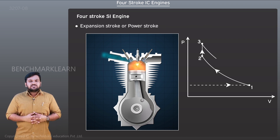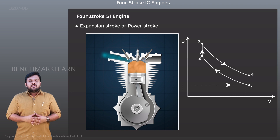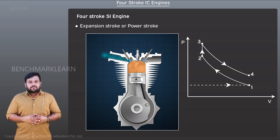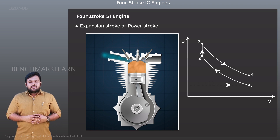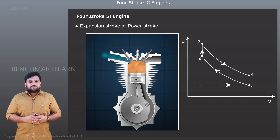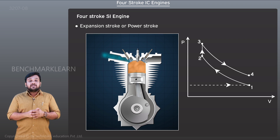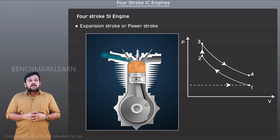In the expansion stroke, or power stroke, characterized by process three to four in the PV diagram, the products of combustion retained in the cylinder expand due to high pressure. This pushes the piston downwards, which is why this stroke is known as the power stroke. The volume of the gases increases and the pressure decreases.